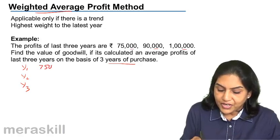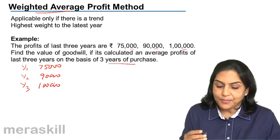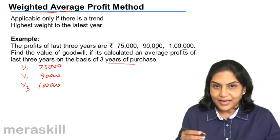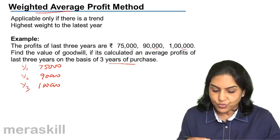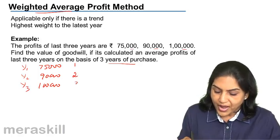So what are the profits? 75,000, 90,000, and one lakh. Now we assign some weights to it in such a manner that the latest year has the highest weight. So let's say it's one, two, and three.